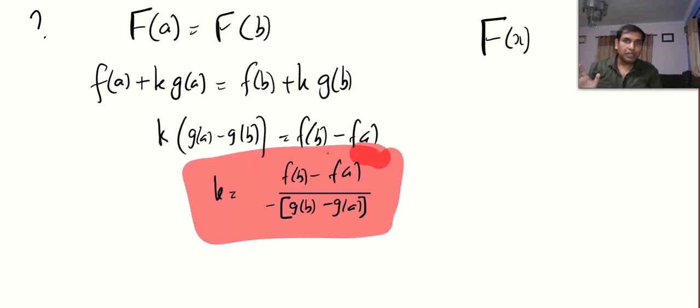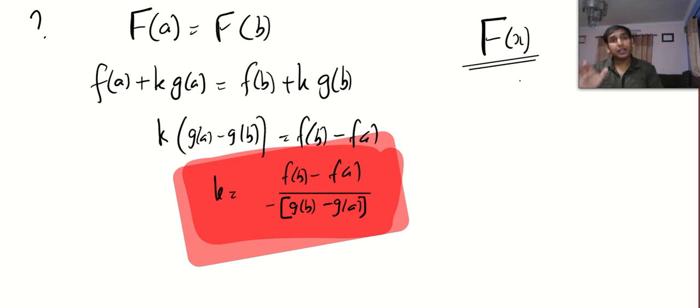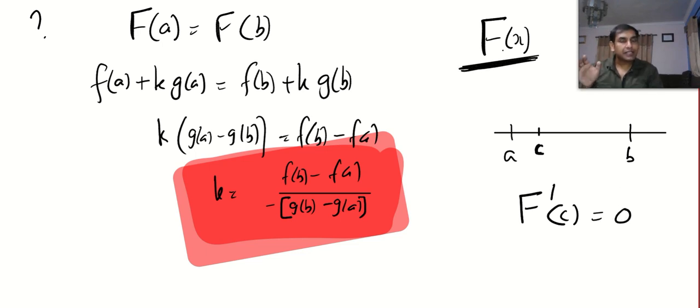Now Rolle's has given us one guarantee: in between a and b there will be at least one point where the derivative of f will vanish. So capital F of x satisfies all the conditions of Rolle's theorem, so in between a and b I will be able to find a point c where the derivative will vanish.